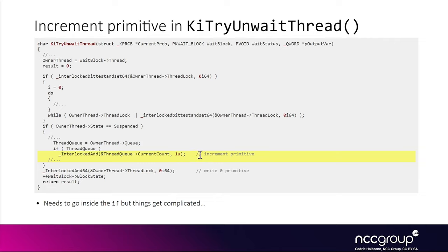The increment primitive is shown in yellow — it's a way to increment the value at a specific controlled address by one. To reach that code path, we provide a wait block and an owner thread, pass the spin lock, and instead of skipping the if condition we go inside it, making the thread's state field suspended and setting a queue for the owner thread. The value at an offset for the queue field address will be incremented by one. It's worth noting that the increment primitive works on a 32-bit value, as indicated by IDA's use of the InterlockedAdd function, whereas the write-zero primitive used a 64-bit InterlockedAnd64.